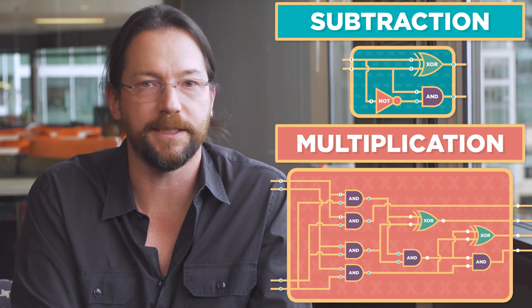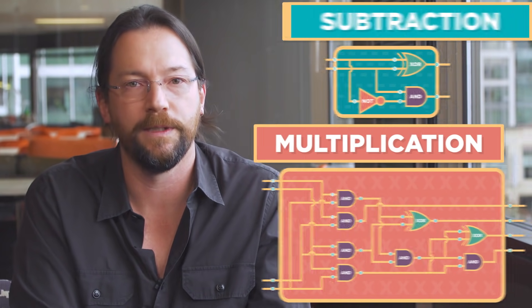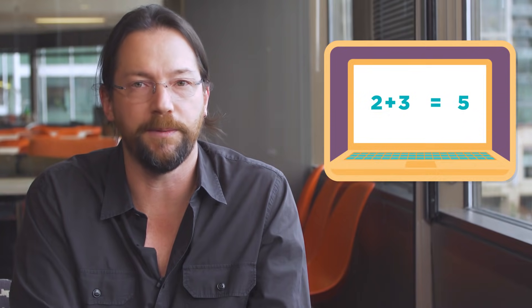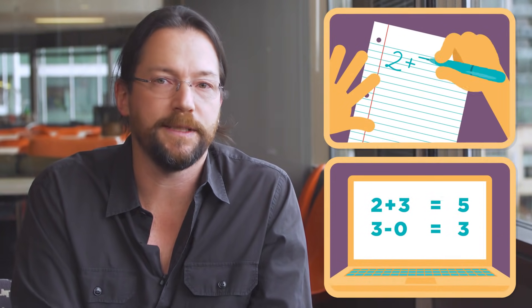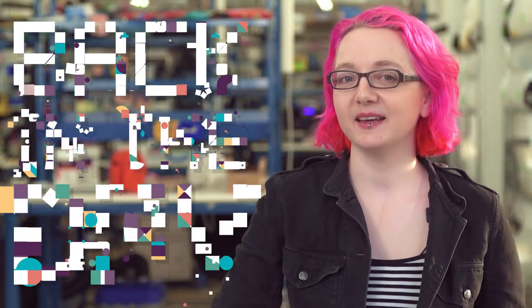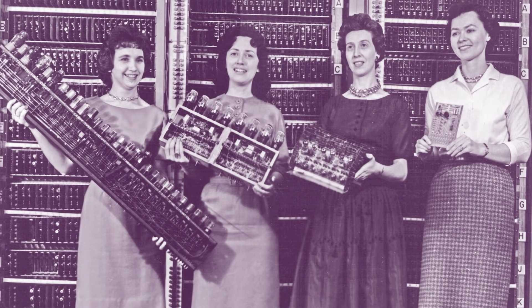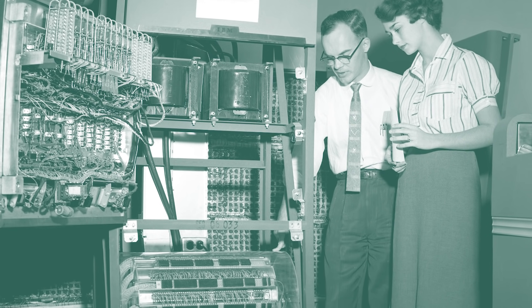In fact, all the information processing your computer does is just lots and lots of small simple operations put together. Each individual operation done by a computer is so simple it could be done by a human, but these circuits inside computers are way, way faster. Back in the day, these circuits were big and clunky, and an 8-bit adder could be as big as a fridge.